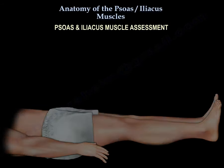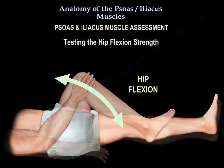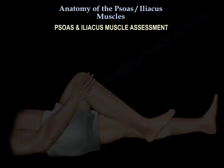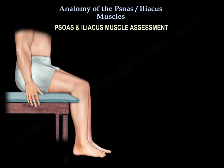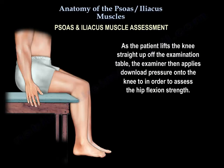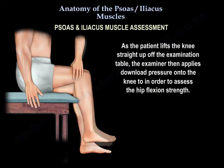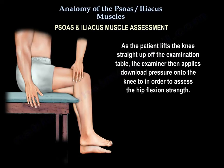Psoas and iliopsoas muscle assessment — testing the hip flexion strength. As the patient lifts the knee straight up off the examination table, the examiner then applies downward pressure into the knee in order to assess the hip flexion strength.